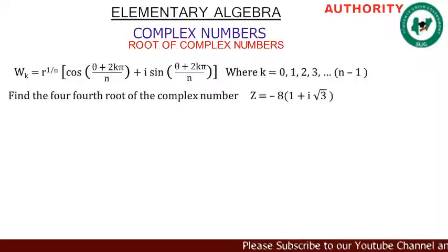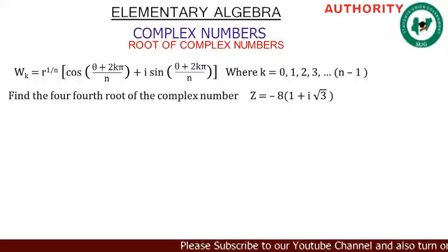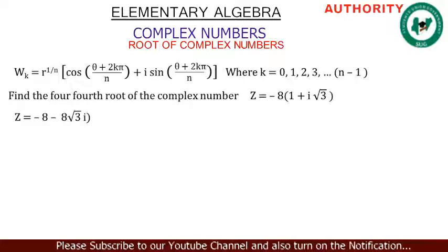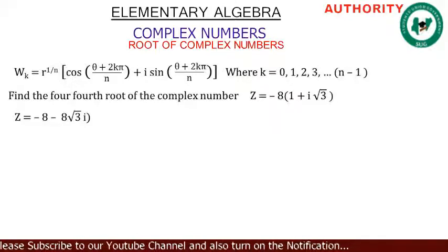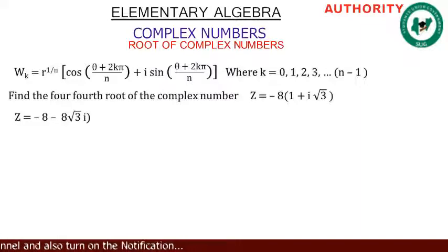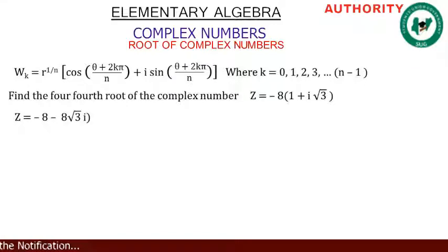We know our z — let's write it in the form x + iy. We use -8 to open the brackets: -8 × 1 = -8, and -8 × i√3 = -8√3 i. So z = -8 - 8√3 i.